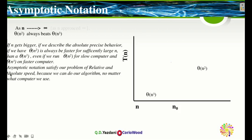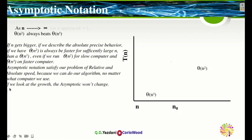Asymptotic notation satisfies our problem of relative and absolute speed because we can analyze our algorithms no matter what computer we use. Relative speed depends on which computer — a faster computer makes it easier. But absolute speed means we run the algorithm no matter what sort of computer, old or new, and it runs the same. So we take the machine out of the equation. If you look at the growth, the asymptotic behavior won't change.